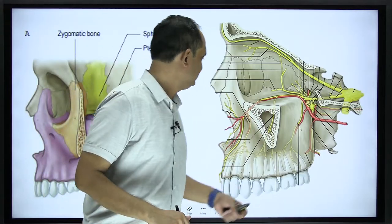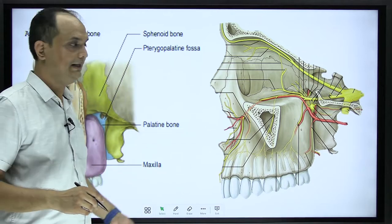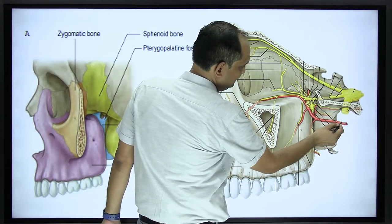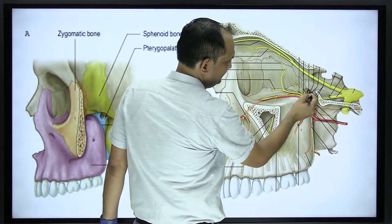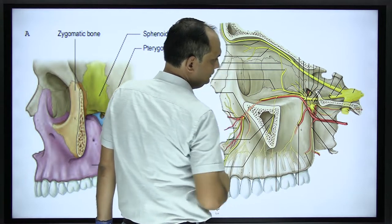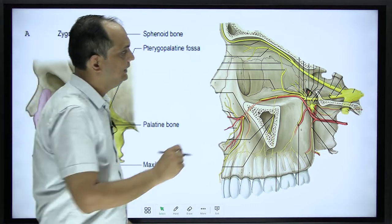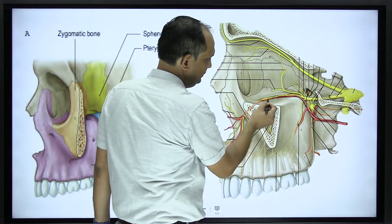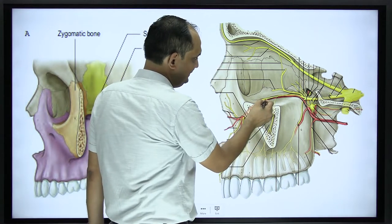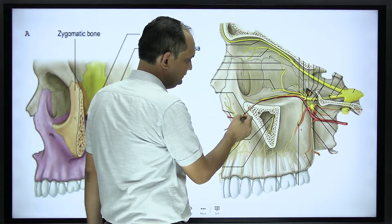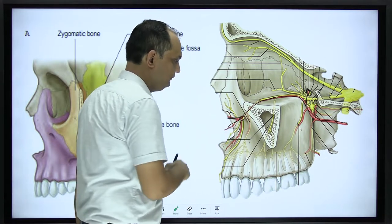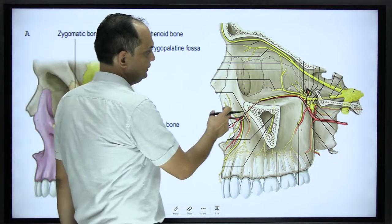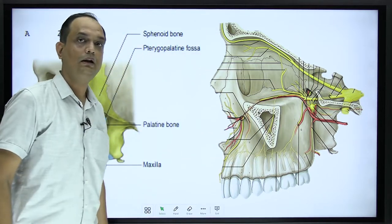Here is a more elaborated diagram where you can see the third part of the maxillary artery taking a medial turn toward the sphenopalatine foramen. Once it enters inside it becomes the sphenopalatine artery. This is your infraorbital artery running into the floor of the orbit, then entering the infraorbital canal, and coming out on the face as the infraorbital artery through the infraorbital foramen. Here you can also see the infraorbital nerve running alongside it.